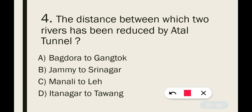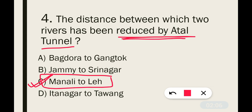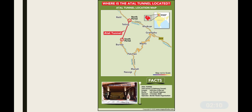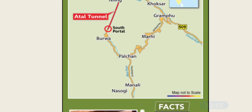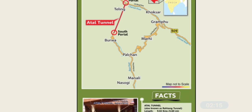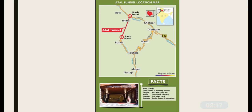Question number 4: The distance between which two places has been reduced by the Atal Tunnel? The correct answer is Manali to Leh. These two places were connected by the Atal Tunnel, near Rohtang Pass. You can see the image of the Atal Tunnel here, marked in red.